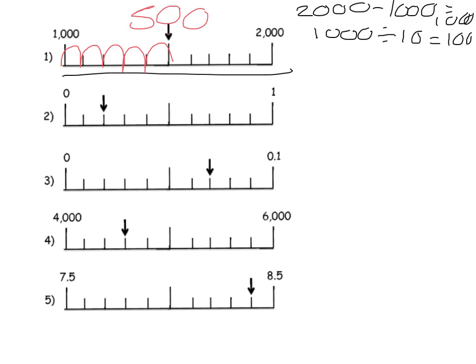So let's look at the second example. The whole thing is worth 1 because 1 take away 0 is 1. Counting the jumps: 1, 2, 3, 4, 5, 6, 7, 8, 9, 10. So 1 divided by 10 is one tenth, or 0.1. So I would go 0.1, 0.2 — or 2 tenths.